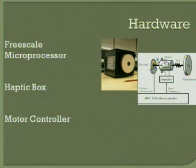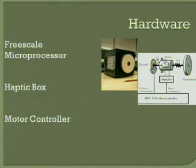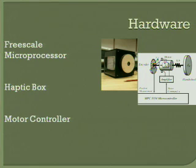To implement this oscillator, we are given the following hardware. First, we have a Freescale MPC5553 microprocessor, and we have a haptic box connected to the microprocessor, which contains an encoder for position measurement, and a motor and a hand wheel. To command the motor, we have a motor controller and power unit.